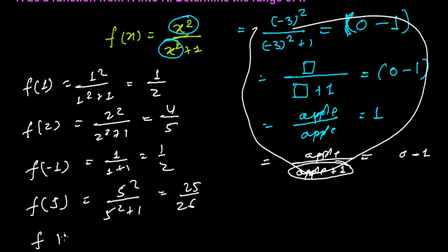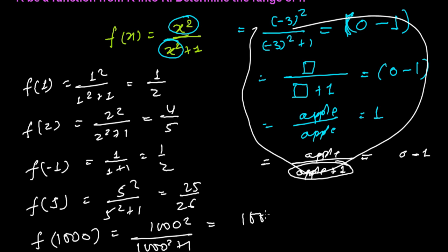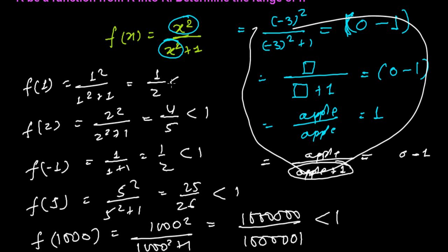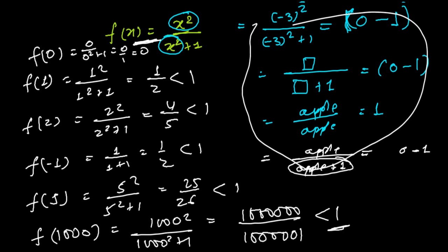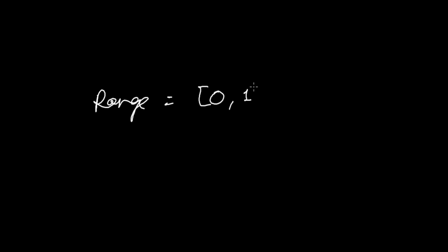If I put x = 1000, I get 1000² / (1000² + 1), which is still less than 1 — the denominator is always bigger by 1. And if I put x = 0, I get 0 / (0 + 1) = 0. So the domain is all real numbers, and the range is always between 0 and 1, including 0 but less than 1. So the range is [0, 1).